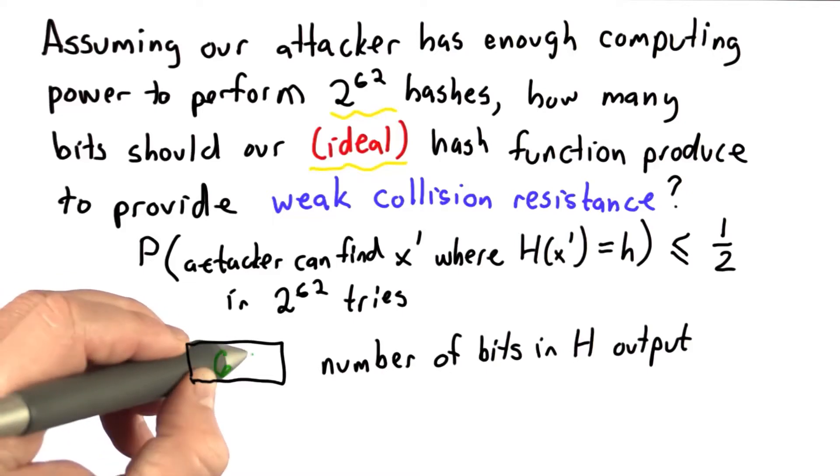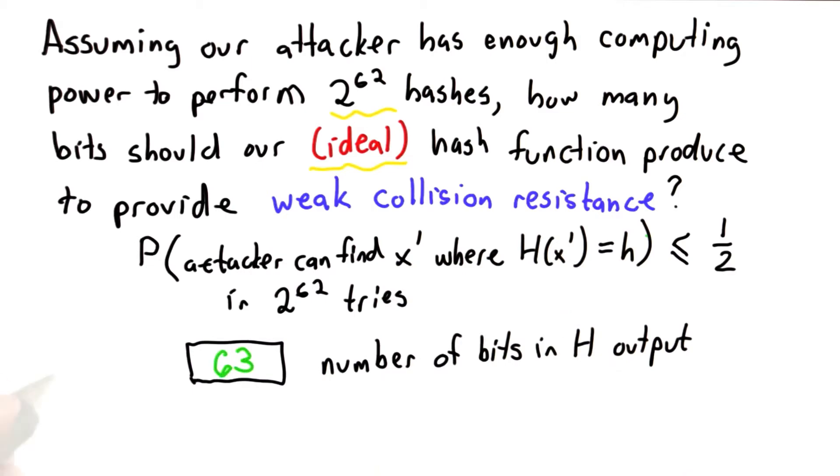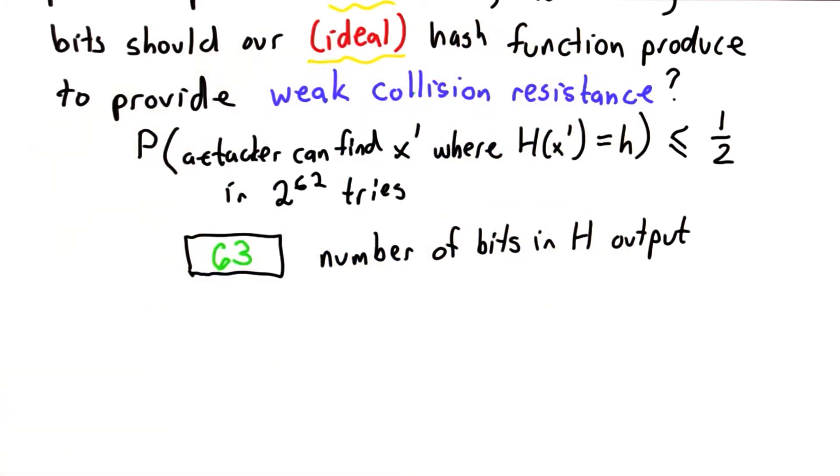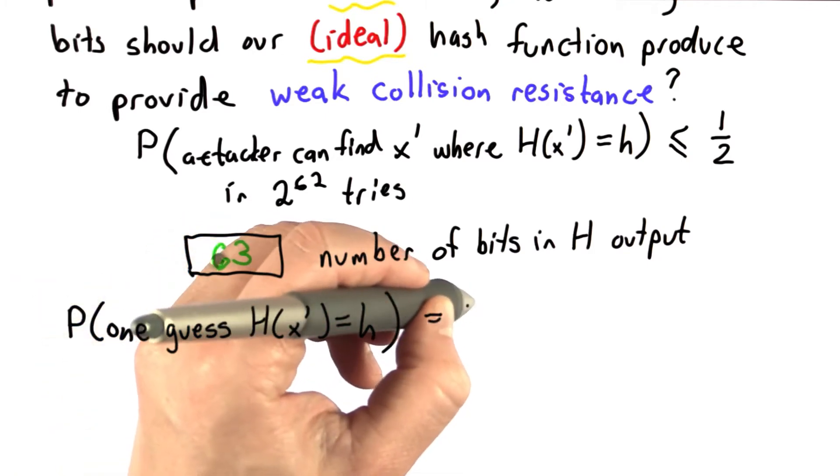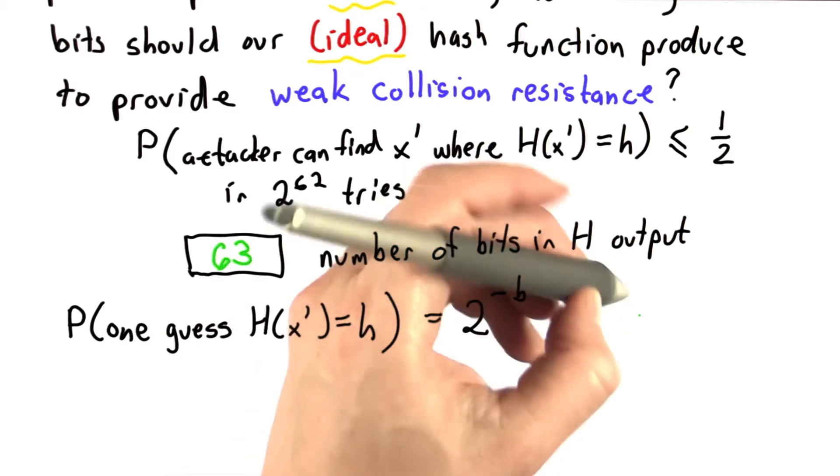So the answer is we need 63 bits to ensure this probability is less than 1 half. And the way to think about this is assuming the uniform distribution of our ideal hash function, every time the probability that one guess maps to h is 1 over the number of bits, or 2 to the negative b. We'll use b to represent the number of bits.